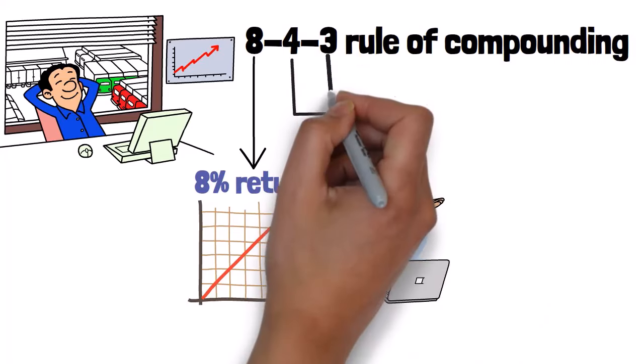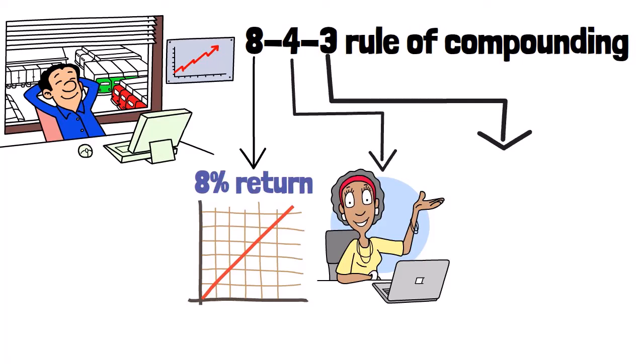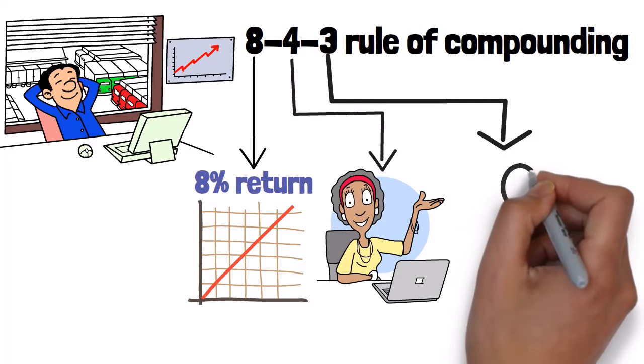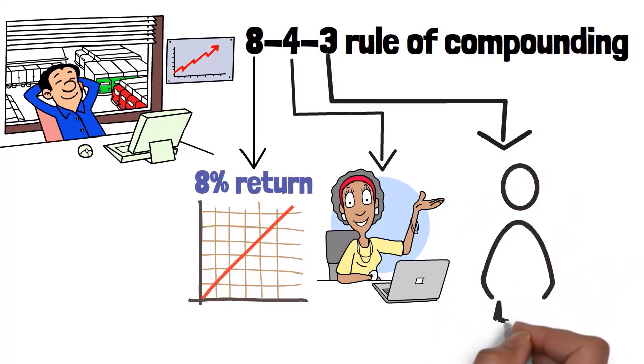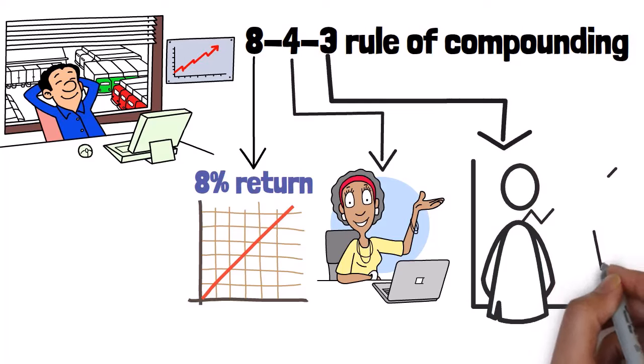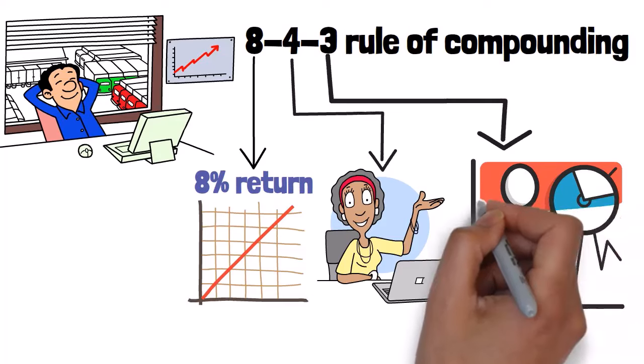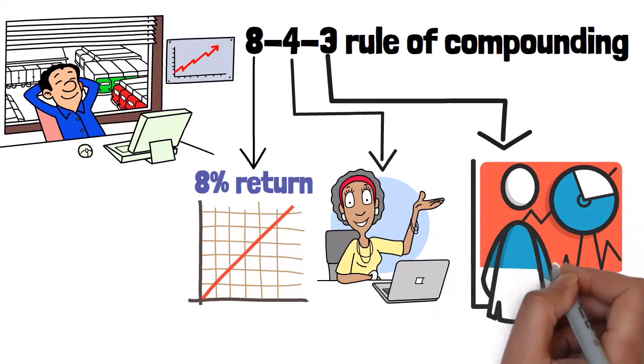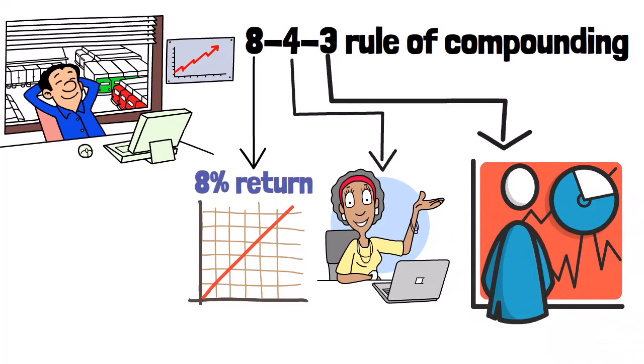And last but not least, we've got the 3. This one is all about diversification, spreading your investments across 3 different assets. Why 3 you ask? It's about lowering your risk and increasing your chances of long-term success. By diversifying, you're hedging your bets and making your overall portfolio more stable.